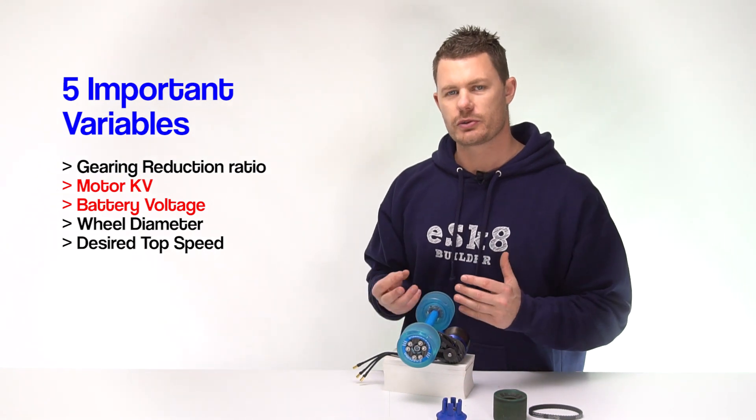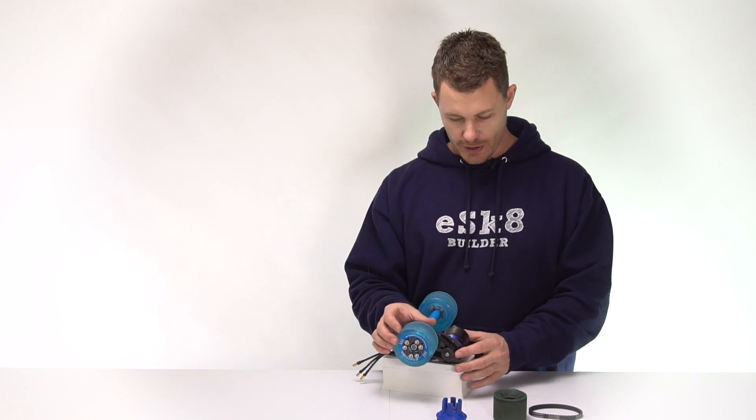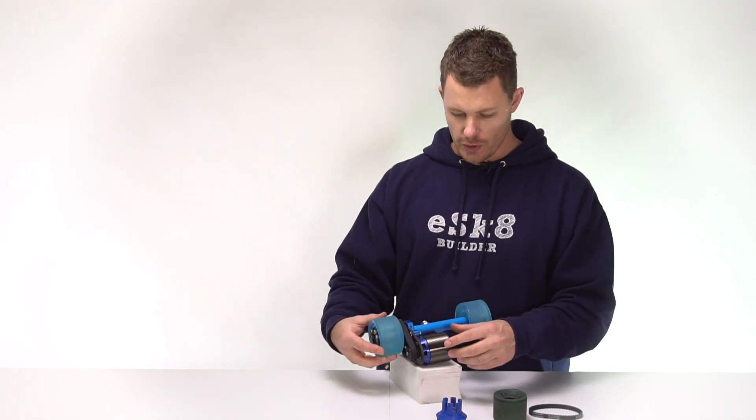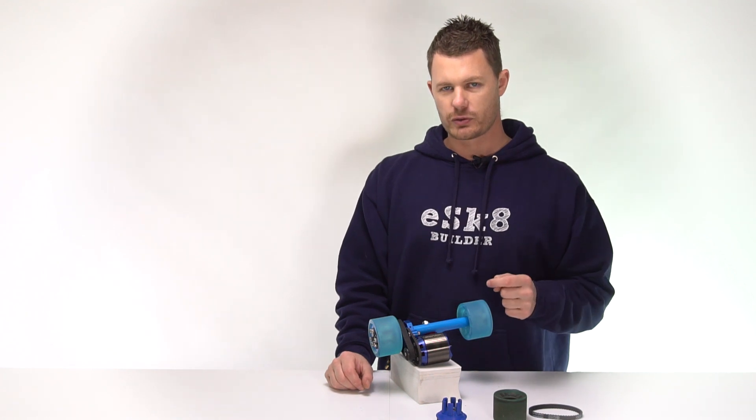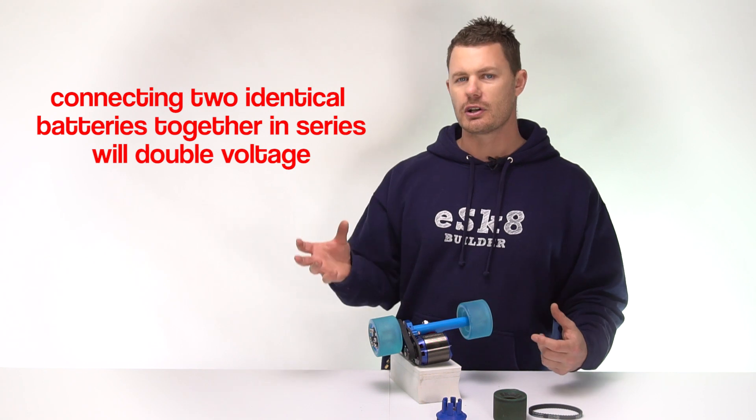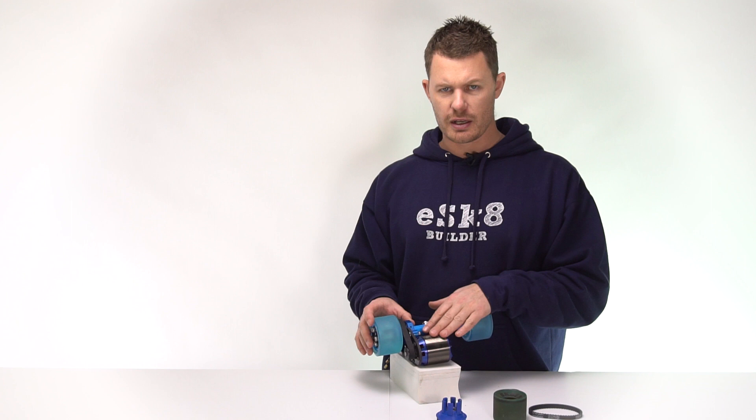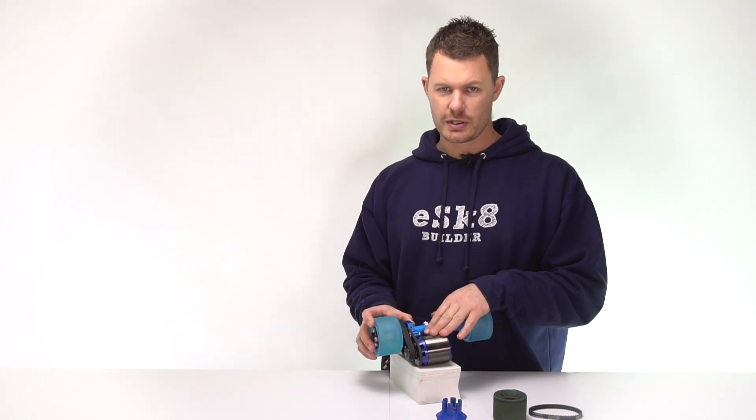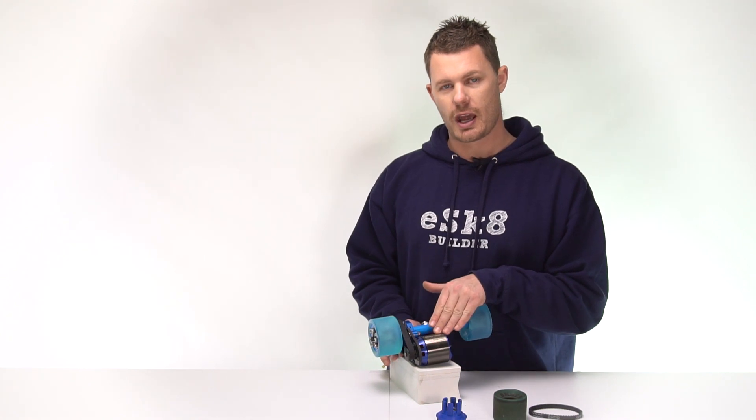Okay the next two variables that we should consider, we've selected our wheel size, we're going with 83 millimeters. The next thing we want to do is work out the motor KV and the battery voltage. You may have seen my other videos where I've spoken about battery voltage, 24 volt, 36 volt, they're the most common.